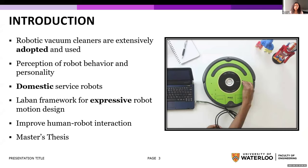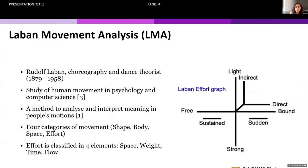Robotic vacuum cleaners are extensively adopted and used currently. It's a very critical issue to study the perception of robot behavior and personality because they are domestic service robots in close proximity with humans in everyday life. The Laban framework is developed for expressive robot motion design, which holds great potential in robotic motion design. My aim is to improve human-robot interaction in my master's thesis.